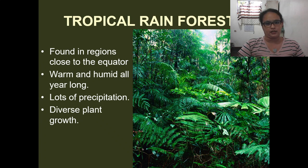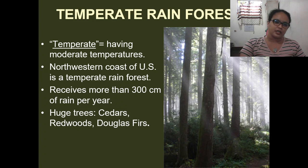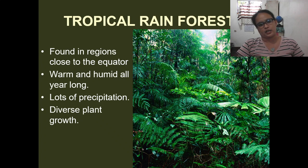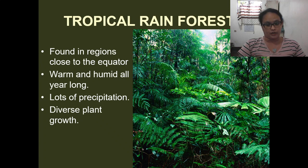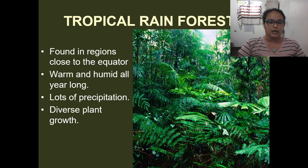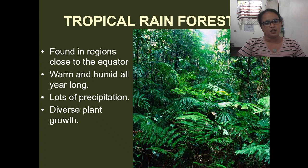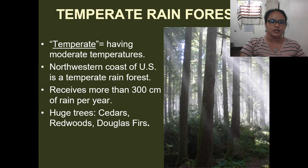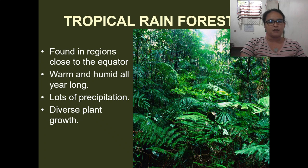Now we will talk about tropical rainforests. Both temperate and tropical rainforests receive around 300 cm of rain per year. But tropical rainforest regions are found close to the equator — like the Philippines, which is close to the equator, making us tropical. It's warm and humid all year long, with lots of precipitation. Compared to temperate rainforests, the plant diversity is much greater with many more species.